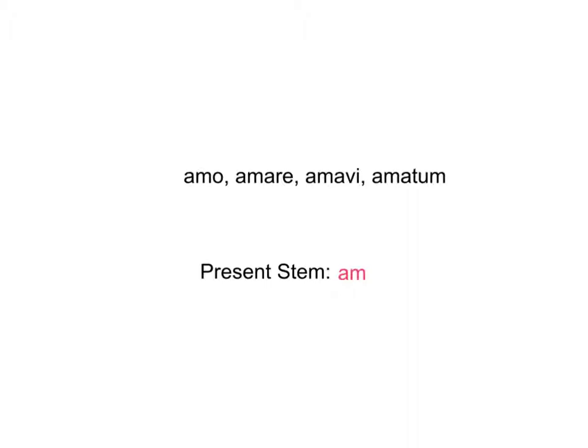As we always do with our verbs, we're going to start off with principal parts, and I've chosen a pretty simple first conjugation verb for us: amo, amare, amavi, amatum — to love. We're going to take the present stem, am, and work with that.